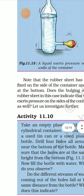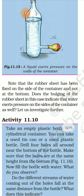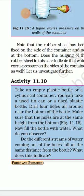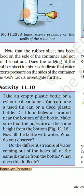Activity 11.10: Take an empty plastic bottle or cylindrical container. You can use a can or plastic bottle. Drill four holes all around near the bottom of the bottle. Make sure that the holes are at the same height from the bottom, figure 11.16. Now fill the bottle with water. What do you observe? Do the different streams of water coming out of the holes fall at the same distance from the bottle? What does this indicate?